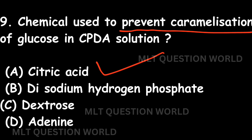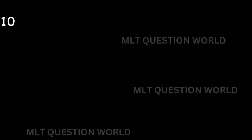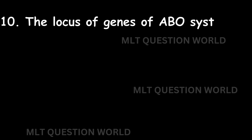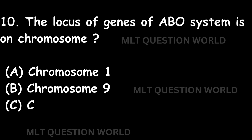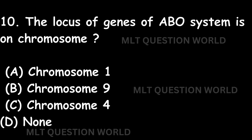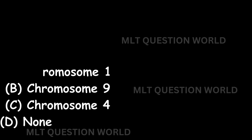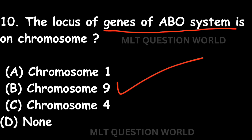Question number ten: The locus of genes of the ABO system is on which chromosome? Option A: Chromosome 1. Option B: Chromosome 9. Option C: Chromosome 4. Option D: None. The right answer is Option B: Chromosome 9. This question was also covered in the Blood Bank Technician preparation.